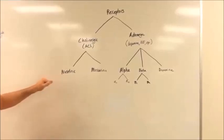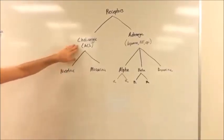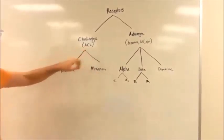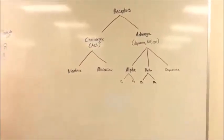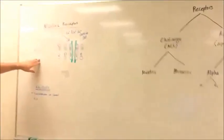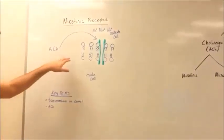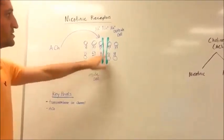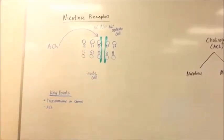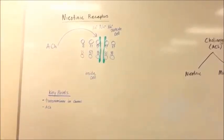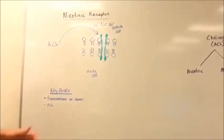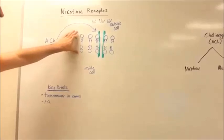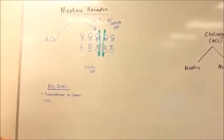We're going to start with nicotinic receptors. Nicotinic receptors are going to be a subtype of cholinergic, so nicotinic and muscarinic both deal with acetylcholine. Over here we have the basics of the nicotinic receptor. You can see our phospholipid bilayer drawn in, and then we've got a channel here which is going to be a transmembrane protein — that's going to represent our nicotinic receptor. The key point to remember is a nicotinic receptor inserts itself into the phospholipid bilayer and it's going to be an ion channel.